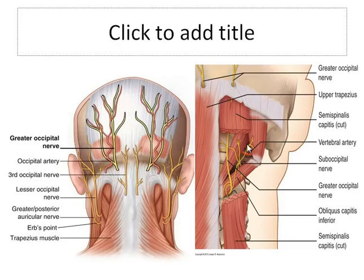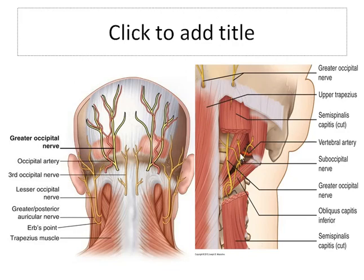Today we are going to discuss the suboccipital triangle. After removing most layers of skin, there comes superficial fascia, and after removing the superficial fascia, there are some muscles — these are trapezius muscle, splenius capitis, and semispinalis capitis. Finally, when the semispinalis capitis muscle is removed, the suboccipital triangle is exposed.